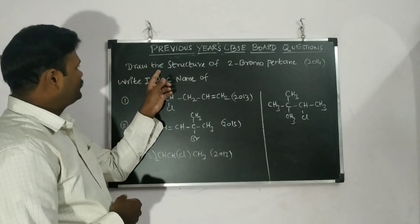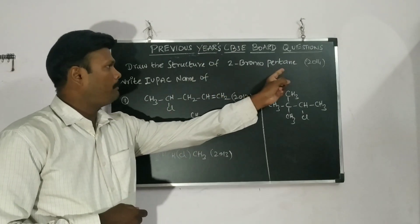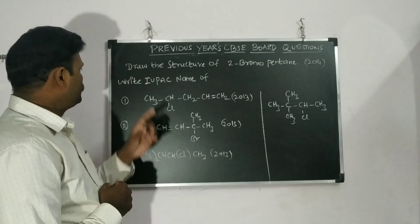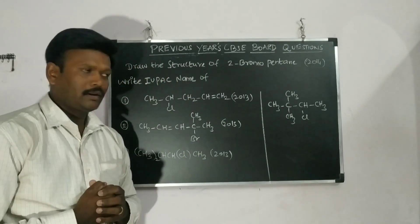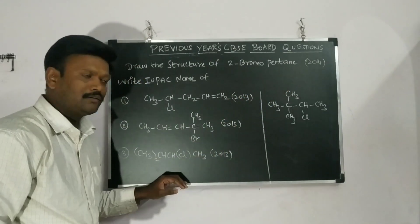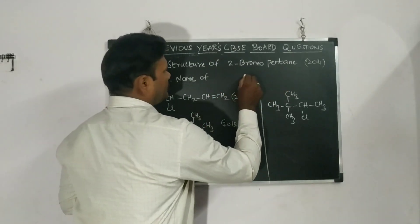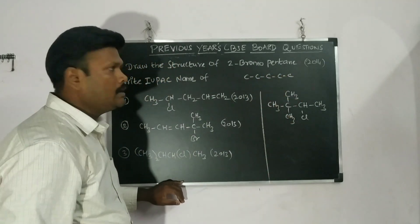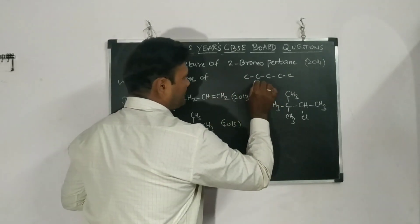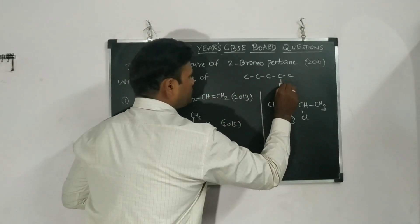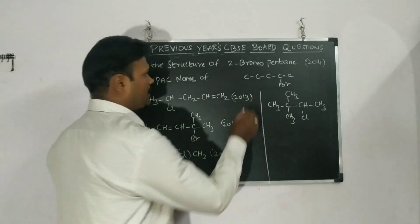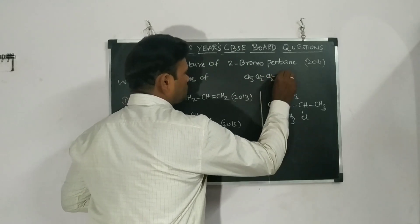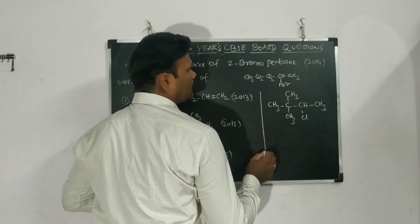In one case, draw the structure of 2-bromopentane. This was asked in the year 2014. Then give the IUPAC name of the carbons. Let's start with 2-bromopentane. Pentane has how many carbons? One, two, three, four, five — pentane. And 2-bromo means bromine is at the second carbon. Now we can solve with the hydrogens: H2, H2, H here, H3 here.